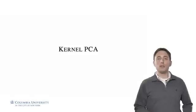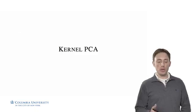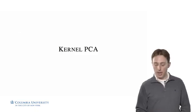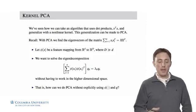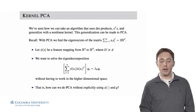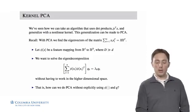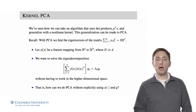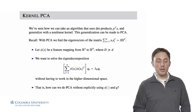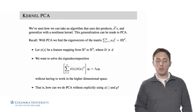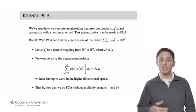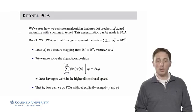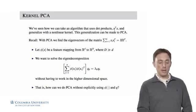In the final part of the lecture, I want to discuss another extension of PCA to kernels. This is a technique called kernel PCA. We've seen how when we have an algorithm that is represented purely in terms of the dot products of our data points, we can generalize the algorithm by replacing the dot products with a kernel. The same exact generalization can be made with PCA. So let's see how that's done.